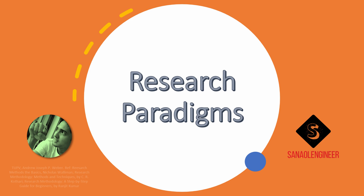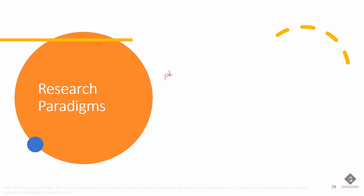For our last topic, research paradigms are also called philosophical perspectives. It is also called philosophical epochs, research programs, research theory, and sometimes it is called the 'isms'.